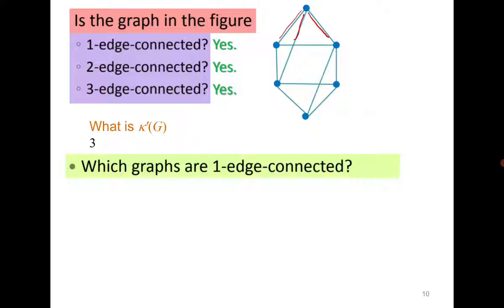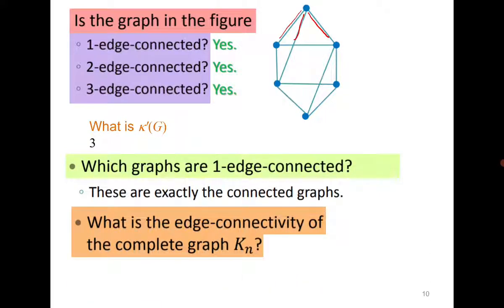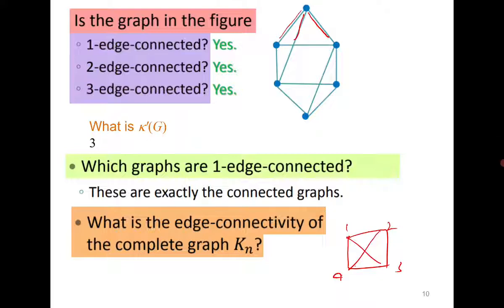All connected graphs are one-edge-connected. For the complete graph K_n, each vertex has degree n−1. To disconnect K_n, you must delete all n−1 edges incident to a vertex, so the edge connectivity of K_n is n−1.